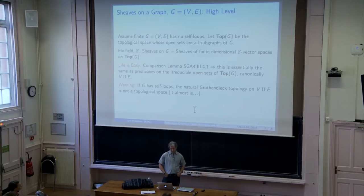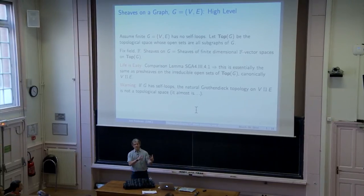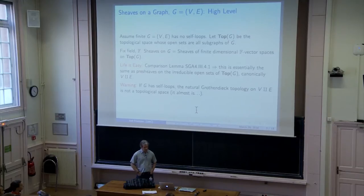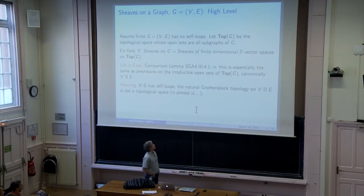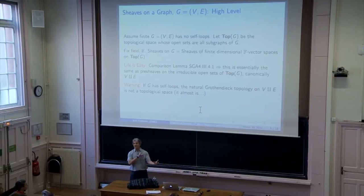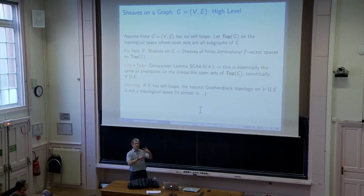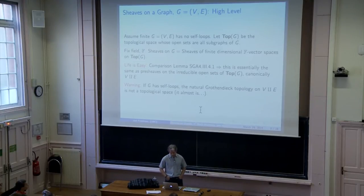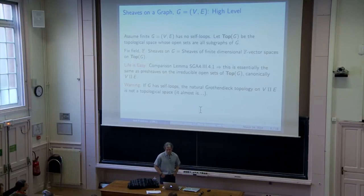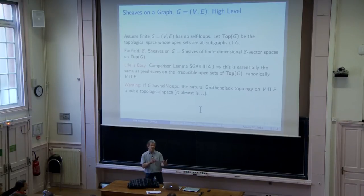Things are a lot easier on a finite topology, where it's enough to look at the sheaf on the open irreducible sets. If you look far enough in SGA 4, you'll find that almost any statement you discover about graphs is somehow a very special case of something done there. I will just quickly talk about pre-sheaves on the open irreducible sets, which is essentially the union of the vertices and the edges.